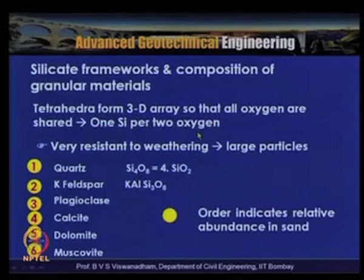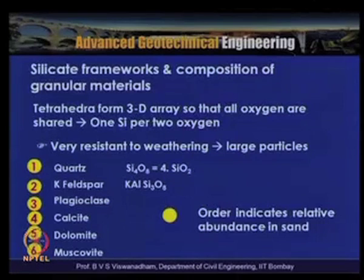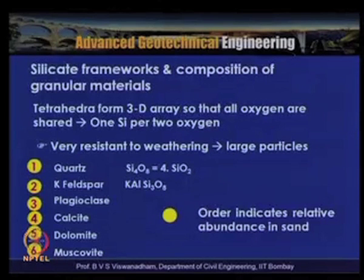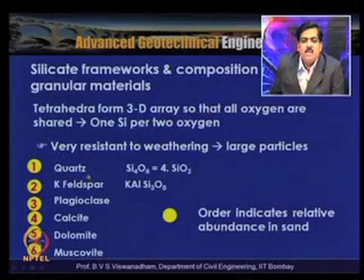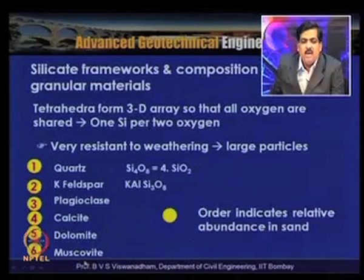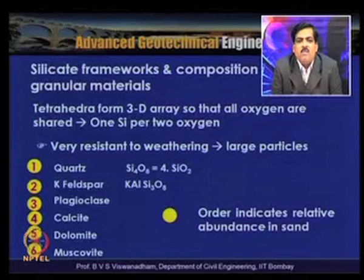In silicate frameworks, the tetrahedra form a 3D array so that all oxygens are shared, giving 1 Si per 2 oxygen anions. These are very resistant to weathering and form large particles. Typical minerals in this category include quartz, K-feldspar, plagioclase, calcite, dolomite, and muscovite — listed in order of decreasing relative abundance in sand.